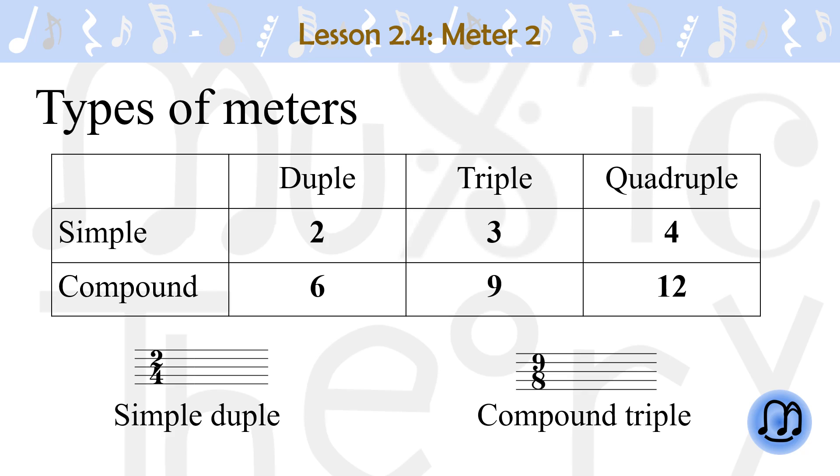If the top number is 2 or 6, the meter is duple. For 3 and 9, it is triple. And for 4 and 12, it is quadruple. If the top number is anything else, the meter is asymmetrical.